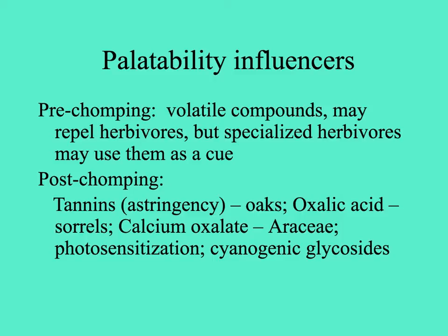Then there are palatability-influencing compounds that take effect after a bite is taken — things that make foliage astringent, like tannins in oak trees, or oxalic acid causing a sharp pungent taste, found in sorrels. Araceae have calcium oxalate crystals. Some compounds create photosensitization in herbivores. Cyanogenic glycosides don't release cyanide gas until the tissue is masticated and the enzymes are brought together with the compounds.